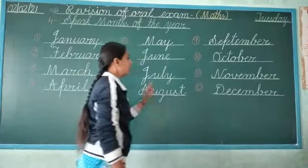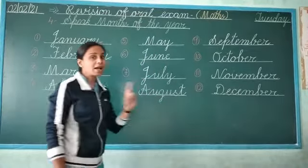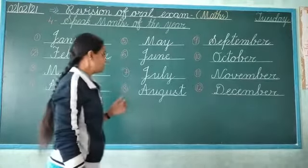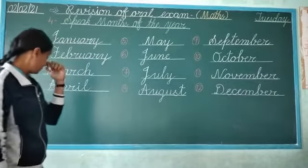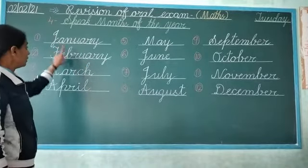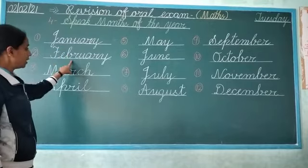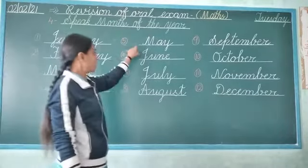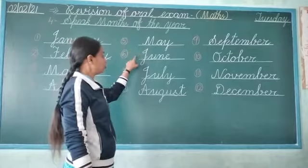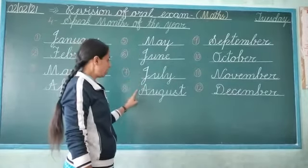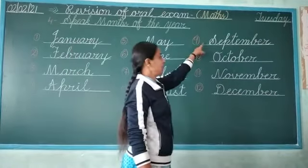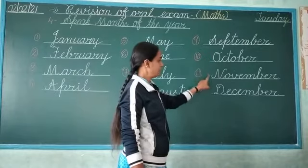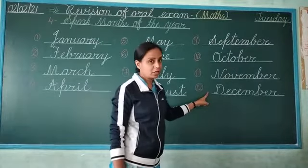So students, there are 12 months in a year: January, February, March, April, May, June, July, August, September, October, November, and December.